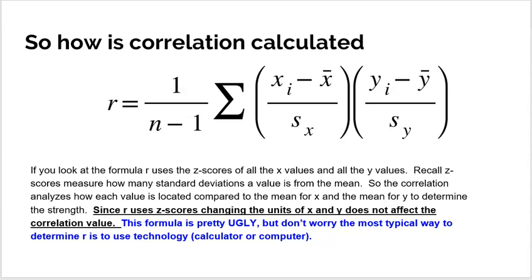Correlation is a mathematical formula. To find r does involve some math. Here's the formula — it's a very ugly formula. It starts off by finding the Z-score for every single X value. Each dot on a scatterplot has an X value and a Y value. So it finds the Z-score for each X value and multiplies it by the Z-score for the Y value, doing that for every single point. Then it adds up all of those products and multiplies by 1 divided by n minus 1. You don't have to know this formula at all — we're going to use technology, usually a calculator or computer, to find r for us.